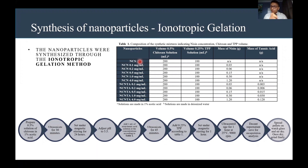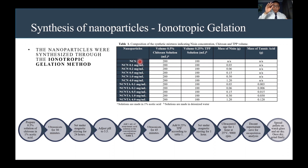We ultracentrifuged it for one hour at 25 degrees Celsius at 9,000 RPM to separate the precipitate from the supernatant. We labeled and saved the supernatant for encapsulation analysis. Then we took the pellet remaining in the centrifuge tube, spread it on a watch glass to air dry, and afterward used a mortar and pestle to grind the nanoparticles down to a fine sand-like sample.